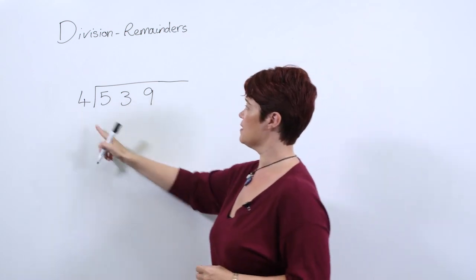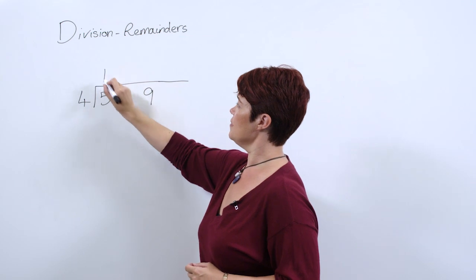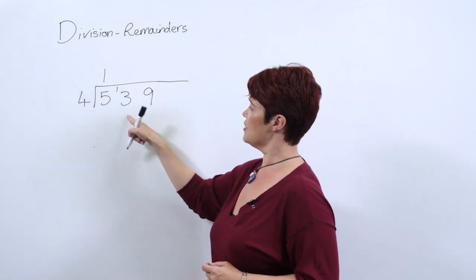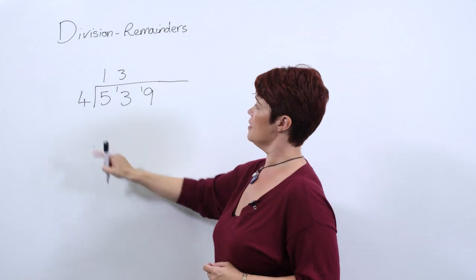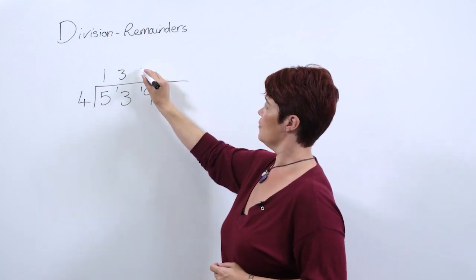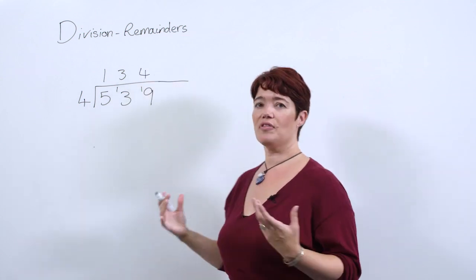Let's go through our bus stop method. 4 into 5 goes once remainder 1, 4 into 13 goes three times remainder 1, and 4 into 19 goes four times and we're left with 3.